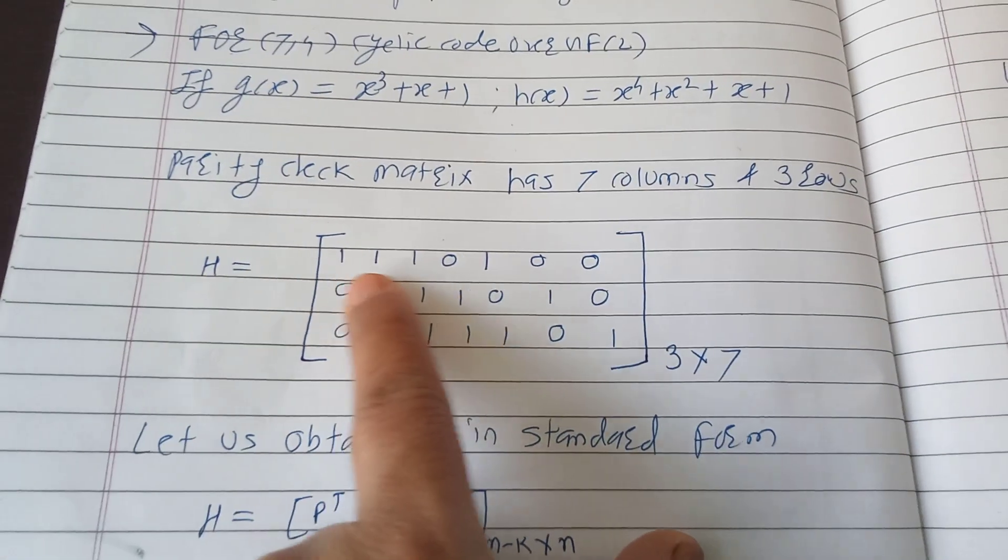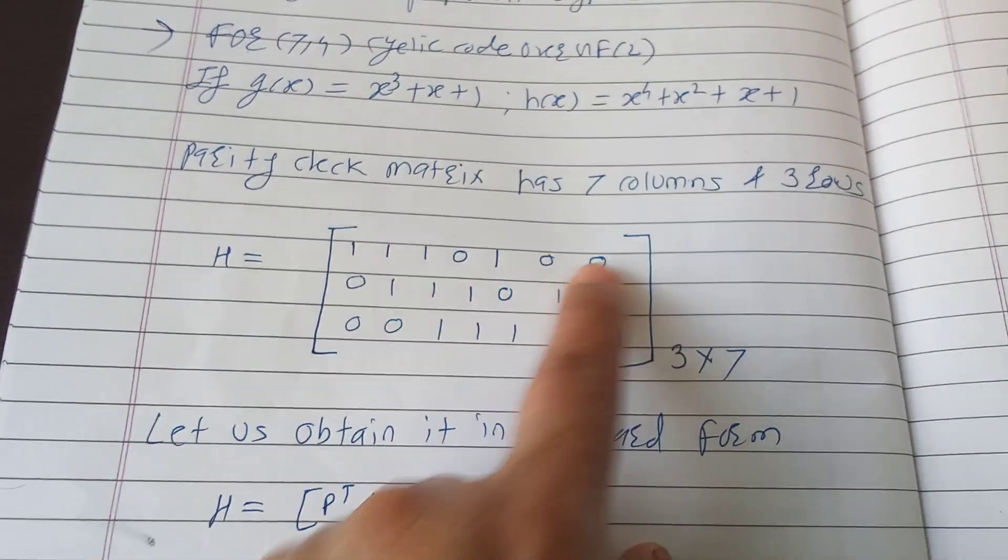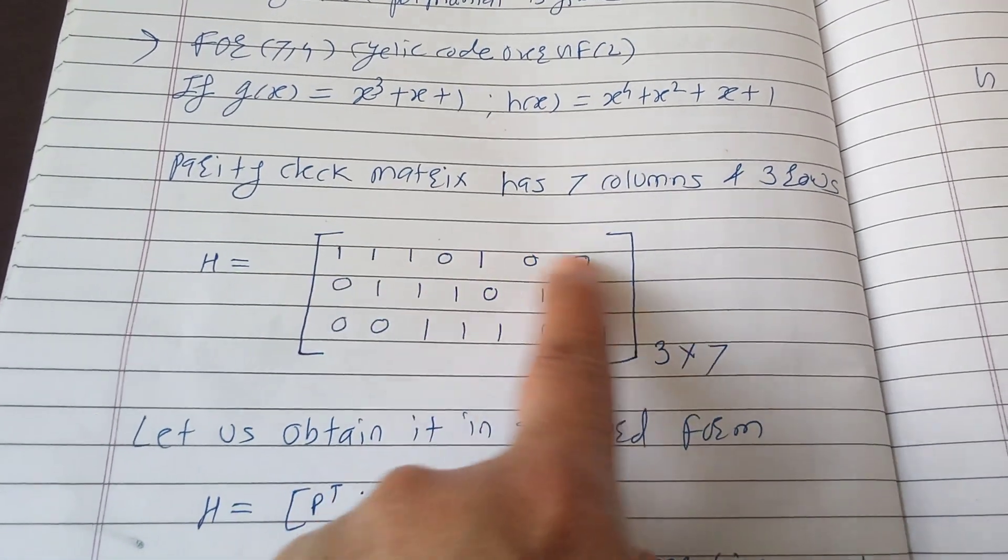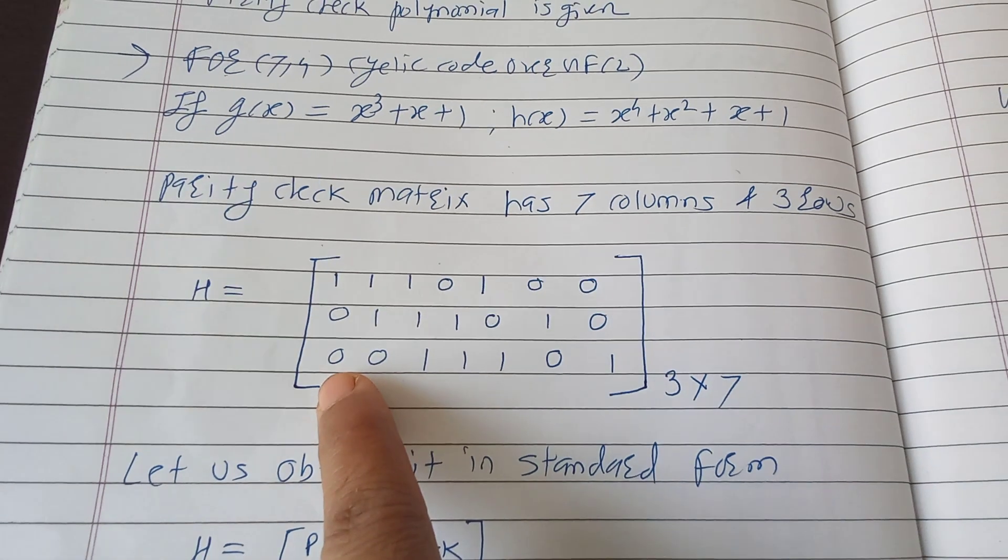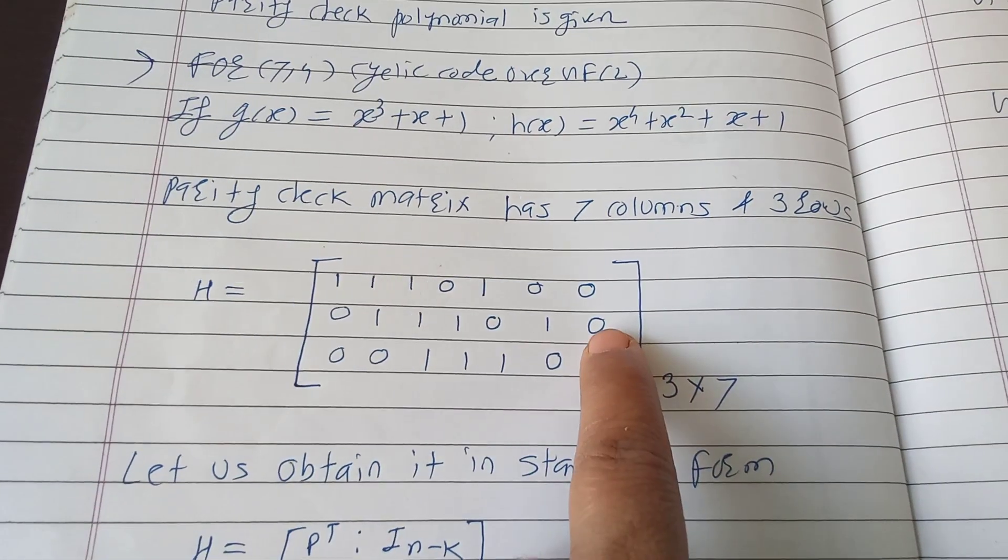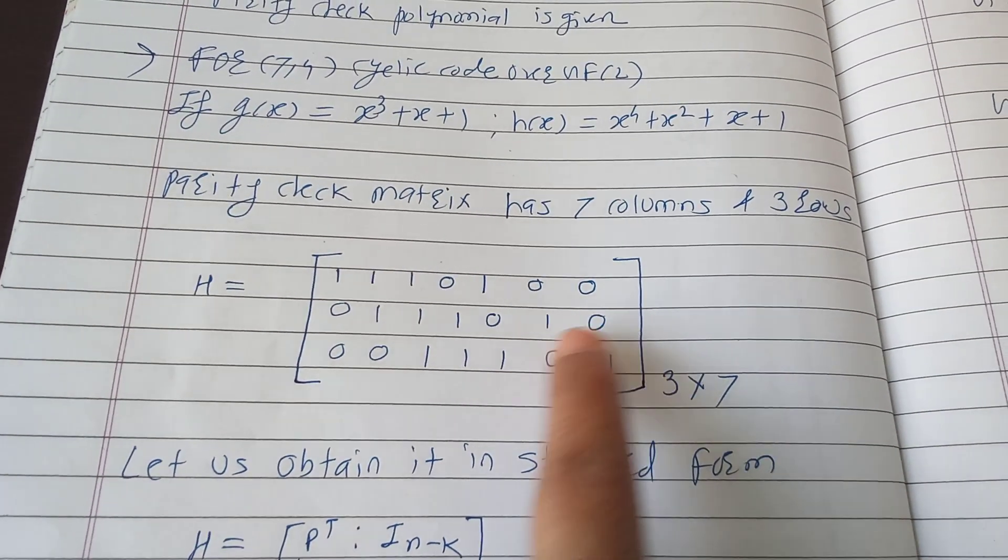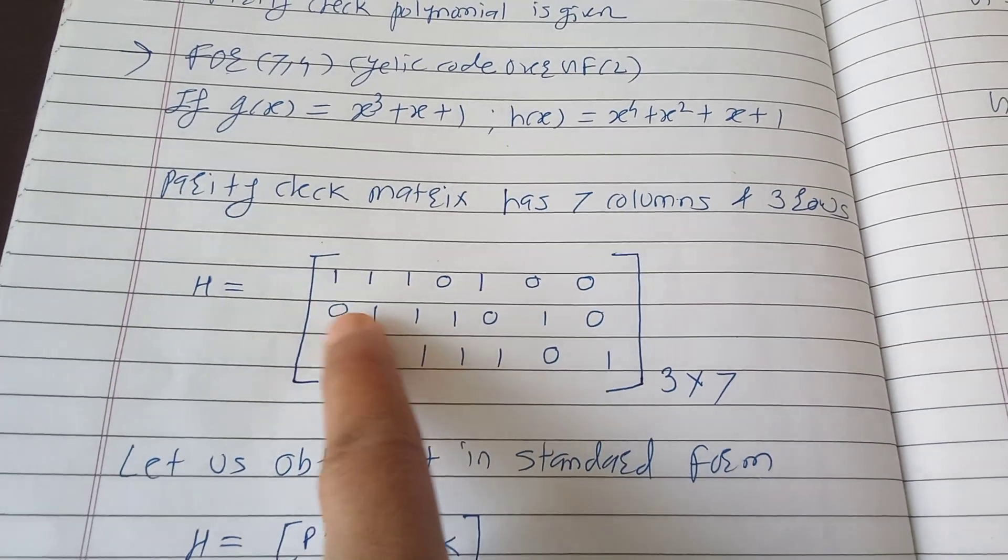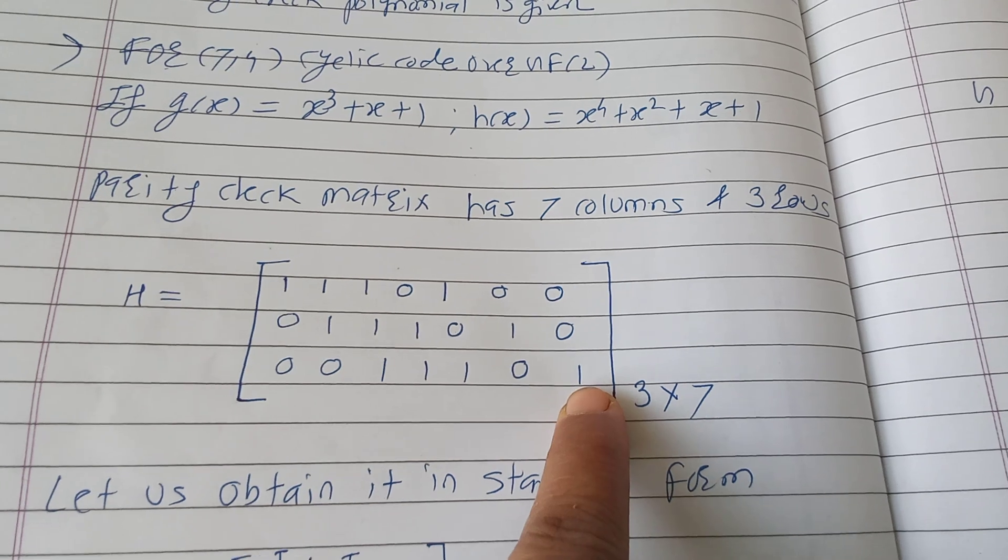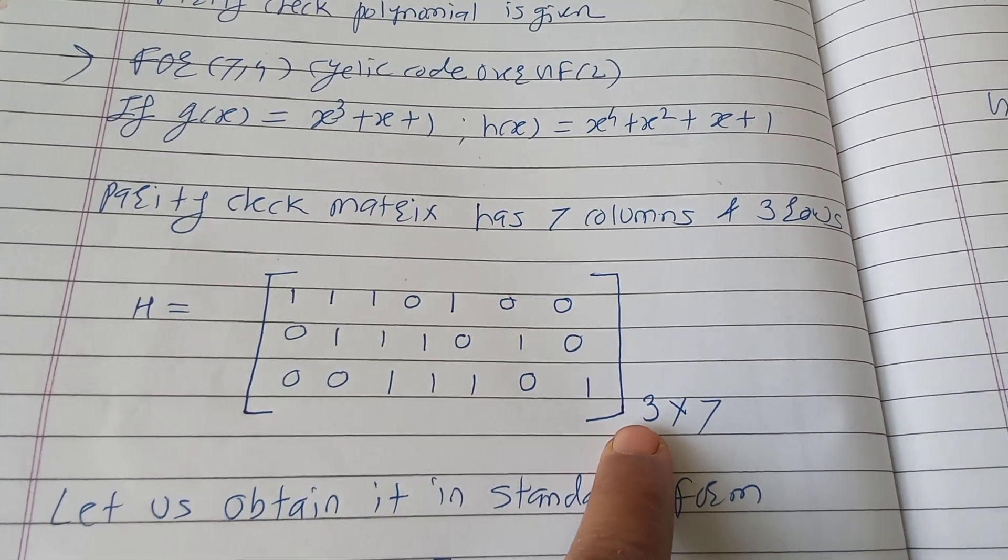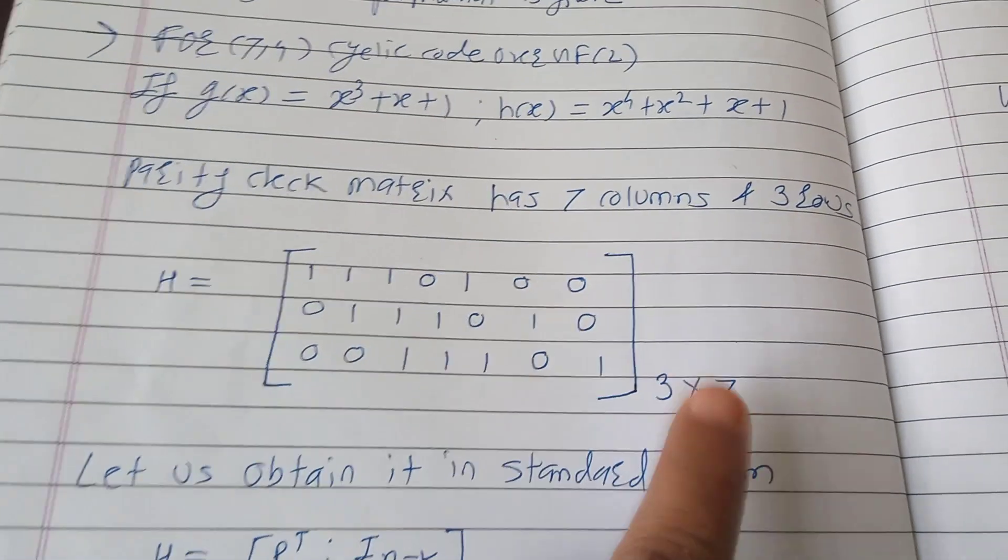After that you do 1 cyclic shift - that means 0 will come here and this will be shifted ahead. This row, for the third row you have to shift this row by 1 cyclic shift, so 0 will appear here and this will be further moved. And you got this H matrix which has 3 rows and 7 columns.